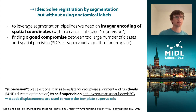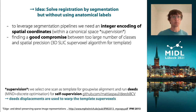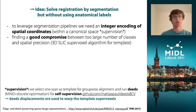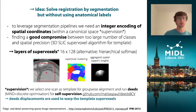To leverage segmentation pipelines, we need some sort of integer encoding of the spatial coordinates obtained once we register all images into a canonical space. Finding a compromise between a large number of classes and spatial precision is quite important. We use the 3D SLICK supervoxel algorithm applied to the template, and found that we need multiple layers of this supervoxel representation to really capture smaller differences in spatial location.